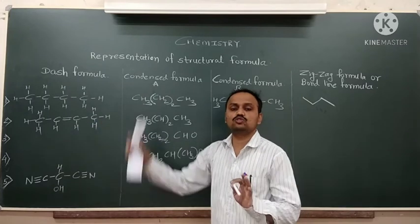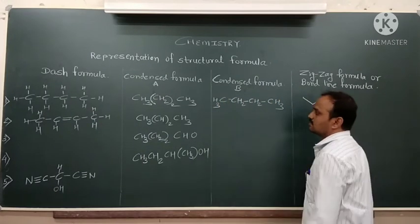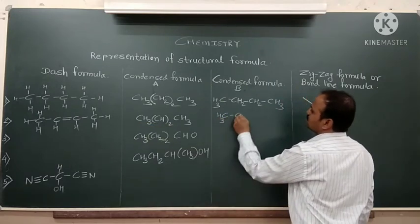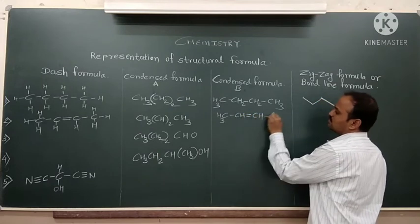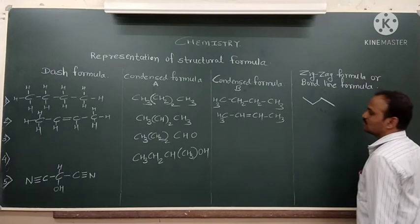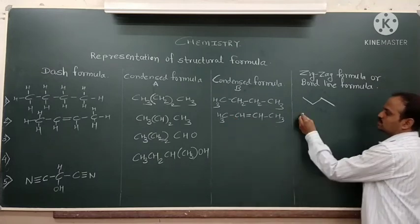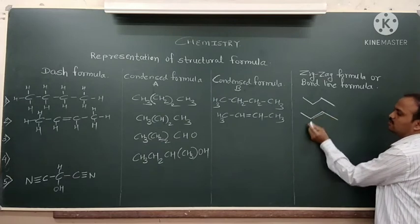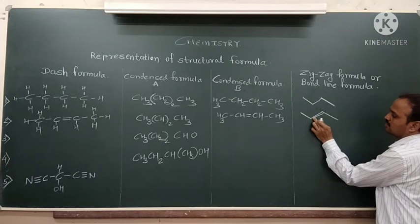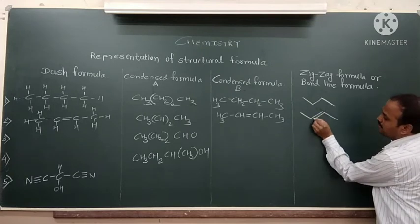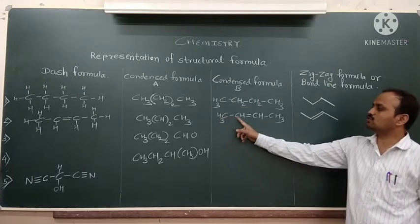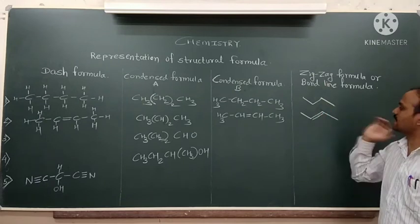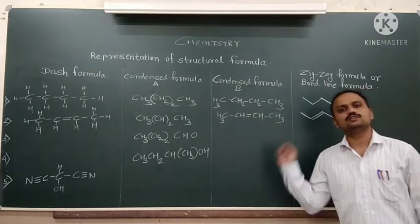Here, CH3, CH3. CH3, CH3, CH3. Total four carbons are there. Therefore, one, two, three, four. And there is a double bond between carbons number two and three. Double bond between two and three. Second and third carbon, there is a double bond. Therefore, this is the zigzag line formula or bond line formula of the molecule.